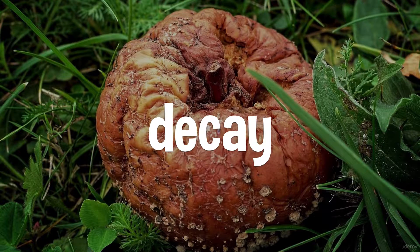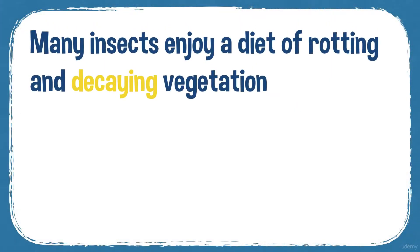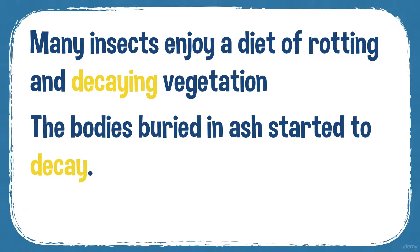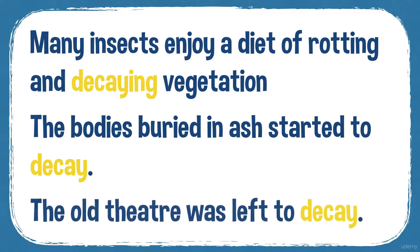Similarly with fruit, here's an abandoned piece of fruit and it's decaying in the ground — bacteria and insects are going to eat it. Example sentences: many insects enjoy a diet of rotting and decaying vegetation. The bodies buried in ash started to decay. And the old theatre was left to decay — so here you've got a building that's decaying.